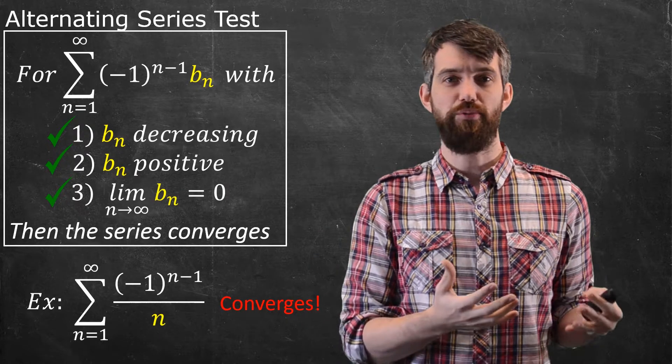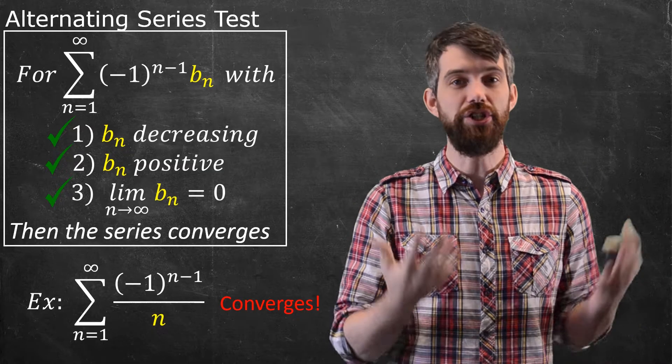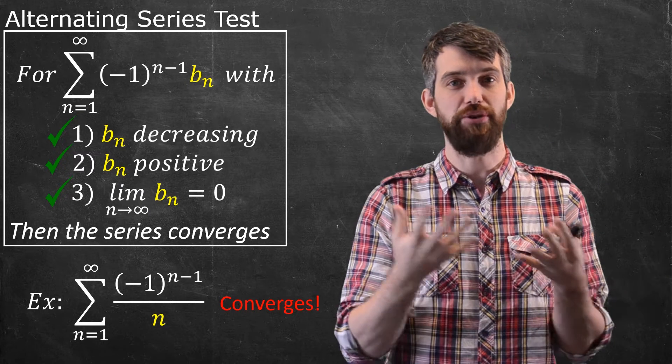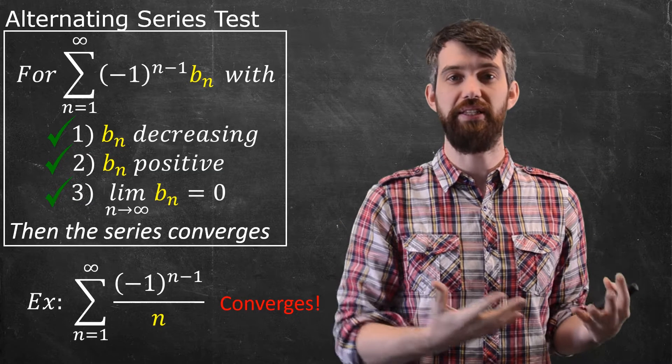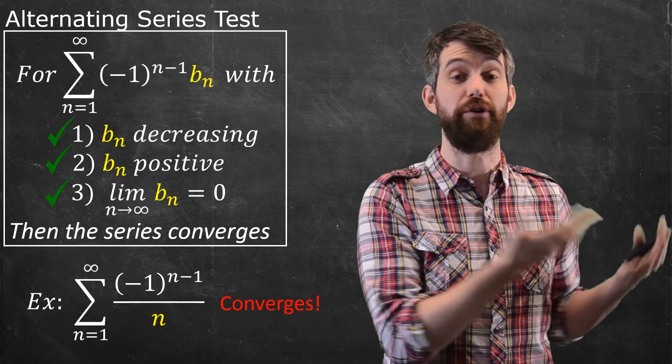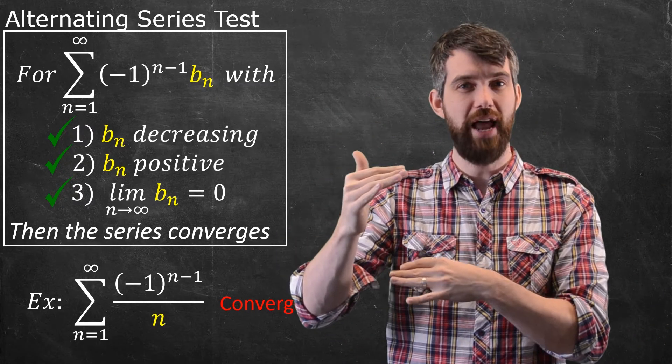Alternating series are nice because they're easy to check. This final condition, that lim b_n = 0, is relatively easy to verify. We use the same calculus methods for limits at infinity, like highest power on top divided by highest power on bottom type of analysis.